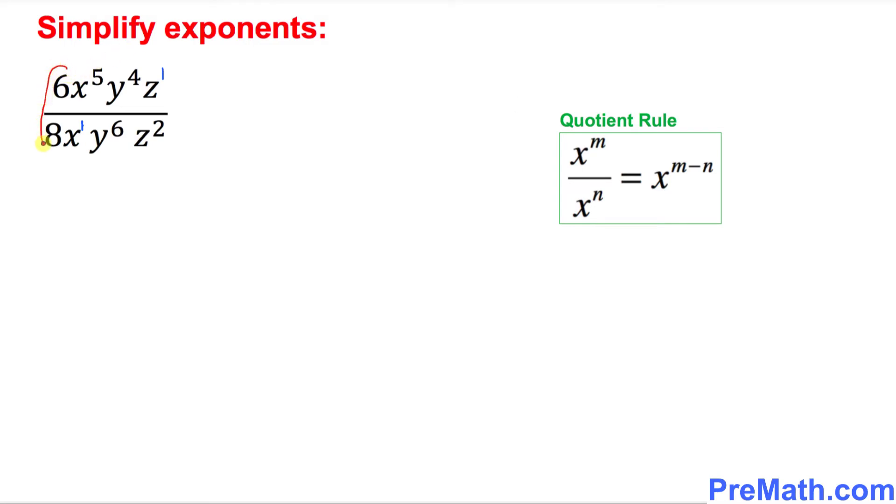Over here, let's look at the coefficients only: 6 and 8. You just reduce them, simplify them as usual. 6 and 8 could be reduced if you divide both sides by 2, could be written as 3 divided by 4.